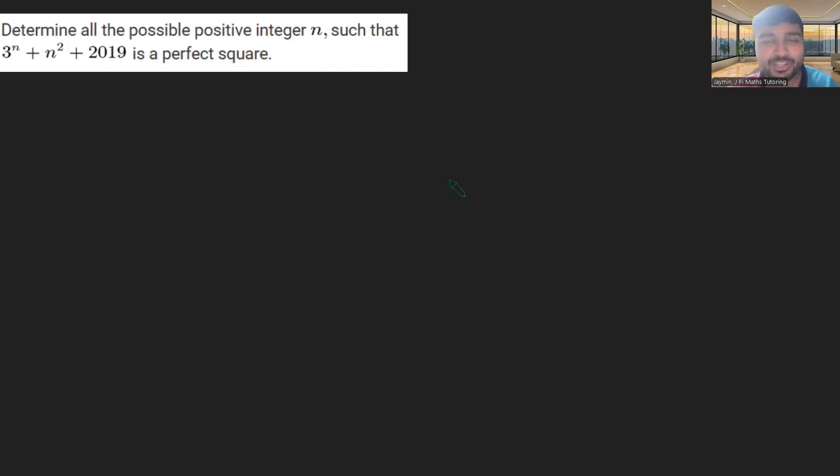Today I've got a fun number theory problem from a Chinese high school Olympiad. We want to determine all positive integers n such that 3 to the n plus n squared plus 2019 is a perfect square. An interesting problem, and it's a very nice number theory problem, and we'll go over various different techniques to solving this.